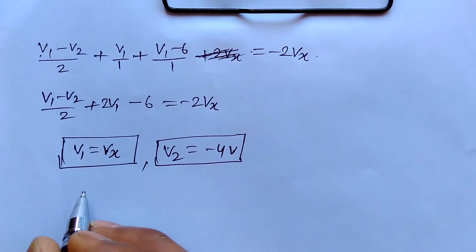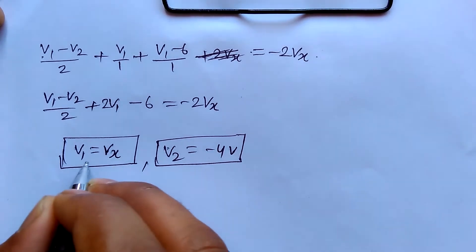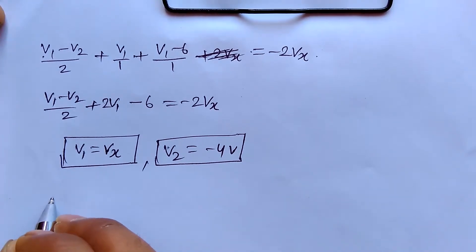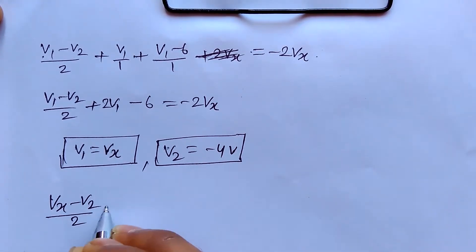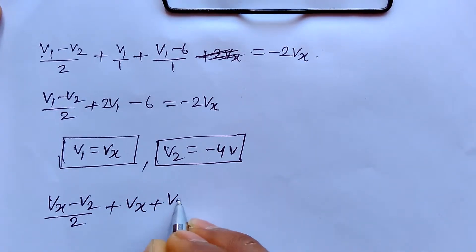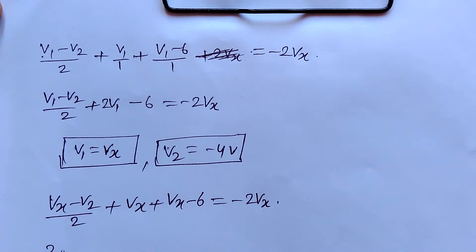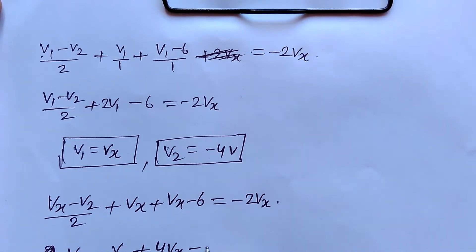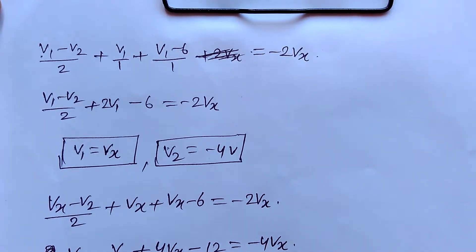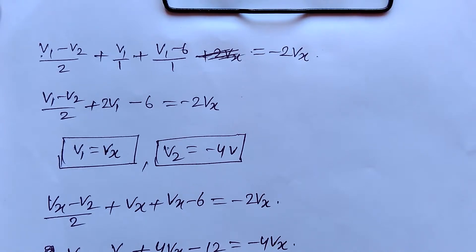Taking V2 from the node and substituting V1 equal to Vx into the first equation, it becomes: (Vx minus V2) over 2, plus Vx, plus (Vx minus 6), equal to minus 2Vx. Multiplying through by 2 and simplifying: Vx minus V2 plus 2Vx plus 2Vx minus 12 minus 4Vx, collecting terms gives 9Vx minus V2 equal to 12.